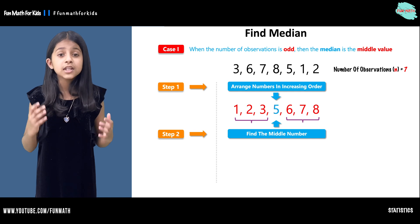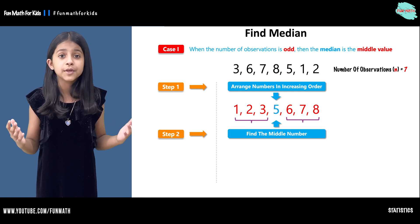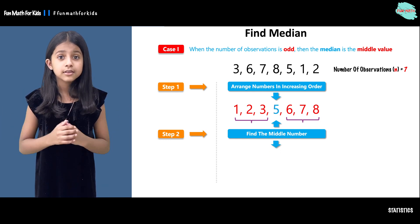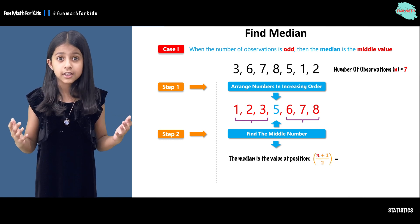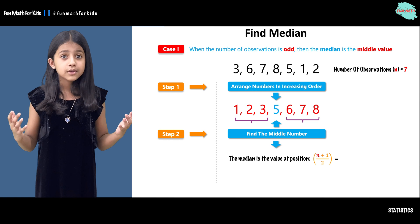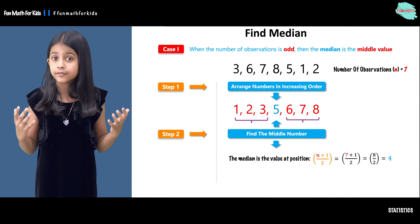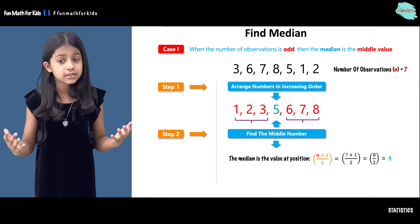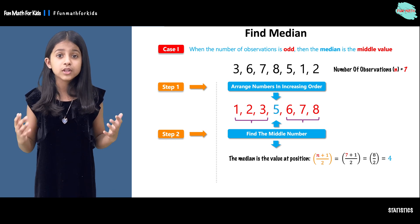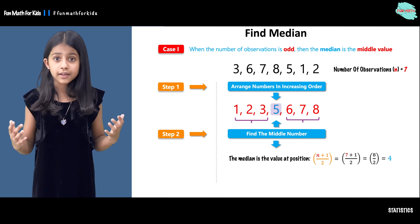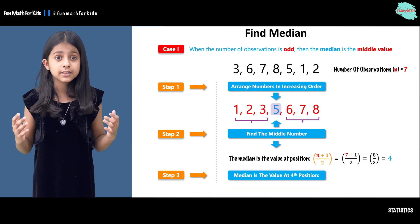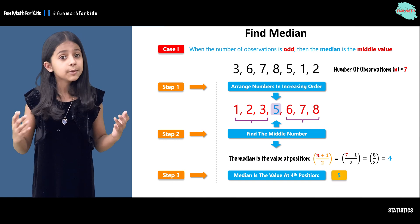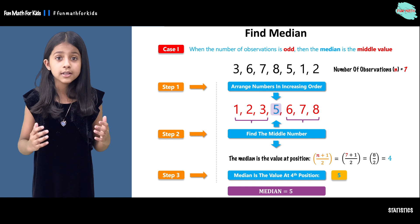But if there are millions of numbers in a set, how do you find the middle number? There has to be some formula, right? You can use this formula: (N + 1) / 2, which is seven plus one over two. If you simplify this, you get eight over two, which equals four. So what is the fourth number in the data set? It is five. So step three: the median is the value at the fourth position, which is five. That is why our median is five.